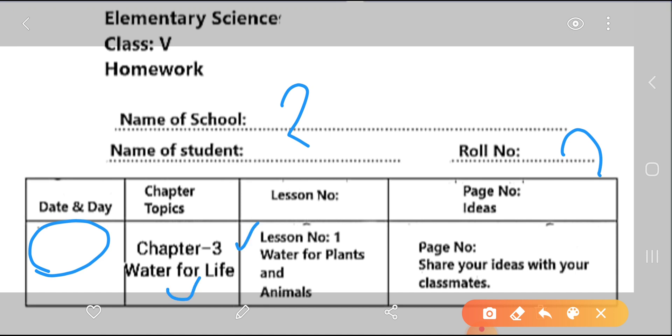Water for life, and lesson number, what's the lesson number, here is lesson number one and that is water for plants and animals, and page number you need to write here page number 15 and ideas, share your ideas with your classmates.